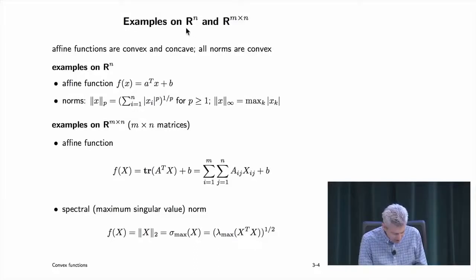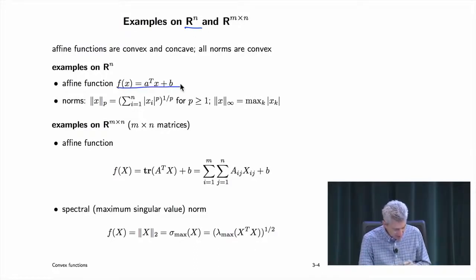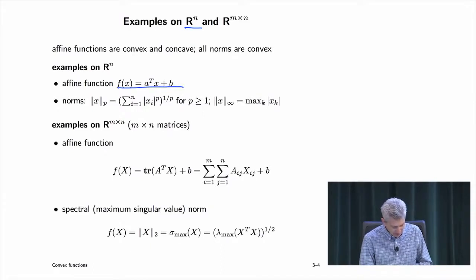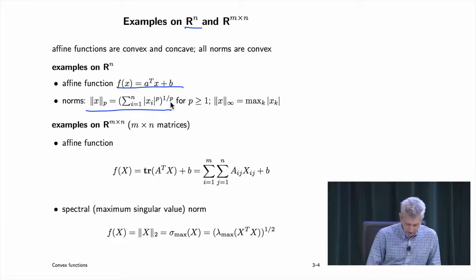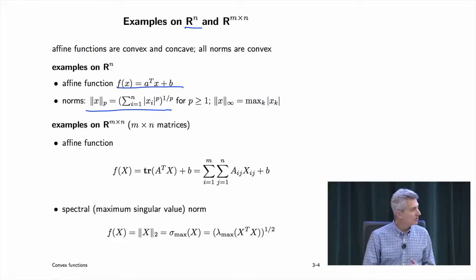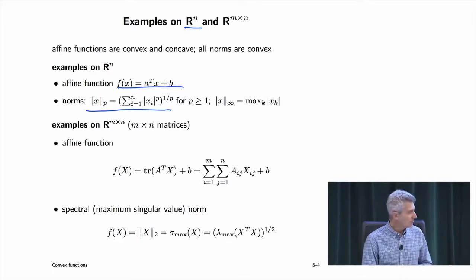Let's look at functions on Rn. A general affine function is both convex and concave. Any norm is convex — that includes the 1-norm, 2-norm, infinity norm, 3-norm, any norm. Any norm is convex.